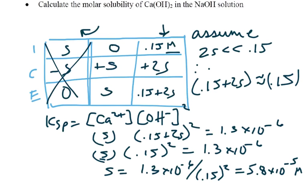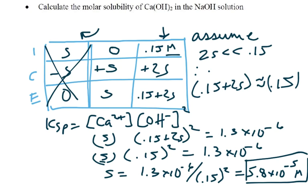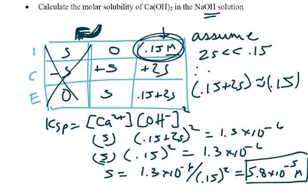This is not surprising — solubility should be lower than before. Solubility in pure water was 6.9 × 10⁻³, and now it's 5.8 × 10⁻⁵, much smaller. That makes sense because the sodium hydroxide provides a hydroxide ion in common, which shifts equilibrium back toward the solid and reduces solubility. For this calculation, the only real difference is we have a non-zero initial value for one of the ions, and then we apply our simplifying assumption to solve.